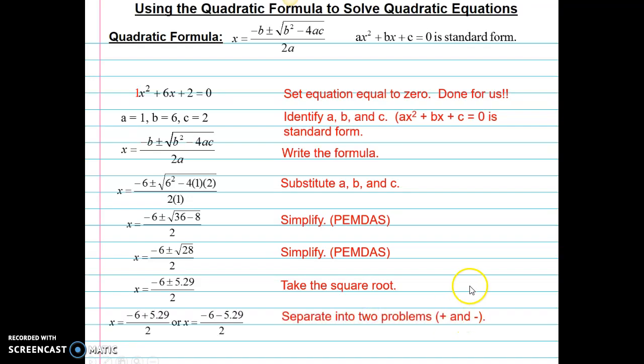Okay, from there, I'm going to break it into two problems. I've got negative 6 plus 5.29 divided by 2, or negative 6 minus 5.29 divided by 2 to take into account both roots. And then I'll simplify those to get my final answer. So my final answer here is negative 0.355 or x equals negative 5.645. And, of course, I could round those off to whatever place value they asked me to round that.